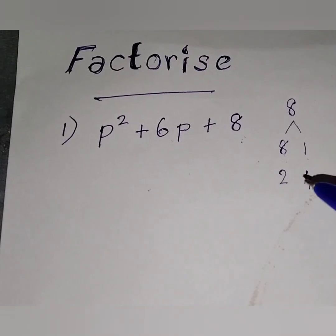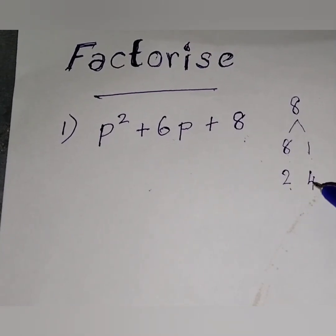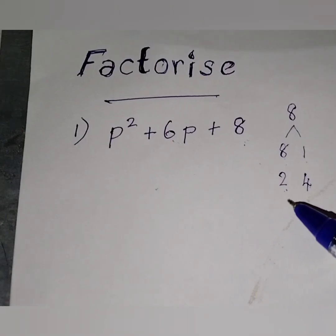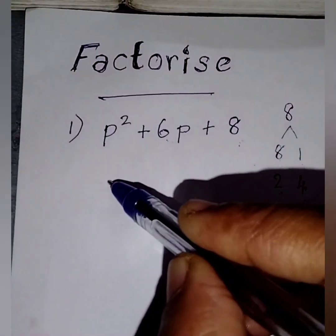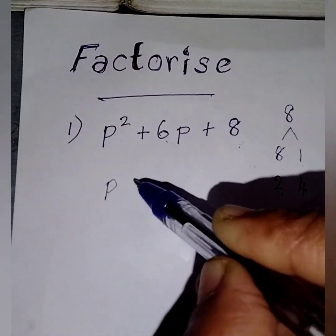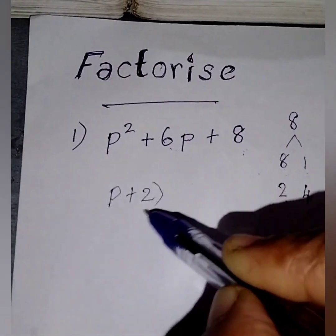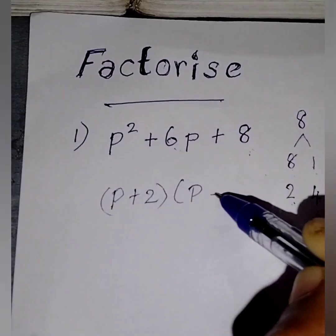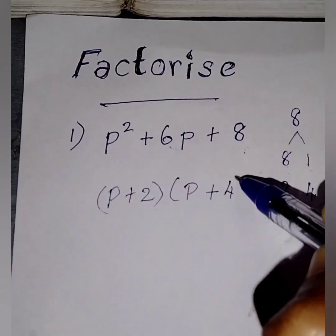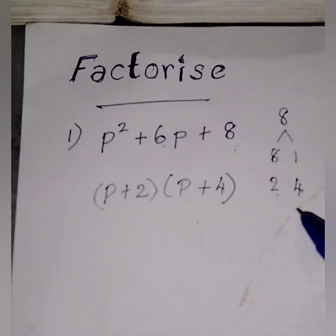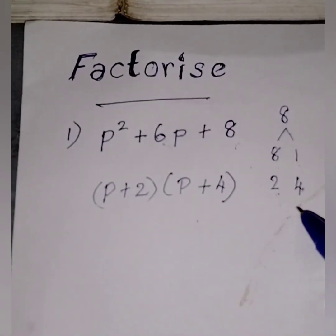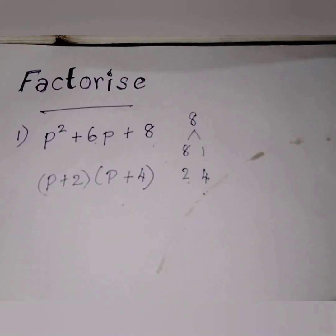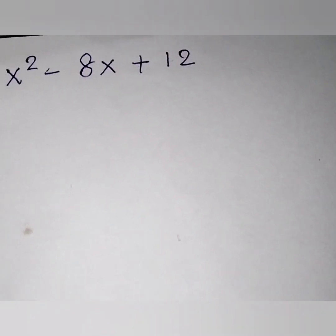It is 2 — 2 fours are 8. So if we add 2 and 4, we will surely get 6. So now write the letter first and write the numbers here: P plus 2 and P plus 4. Since we are adding, we write it as plus 2 and plus 4.